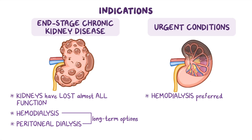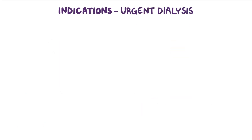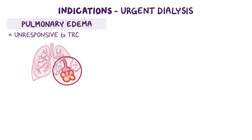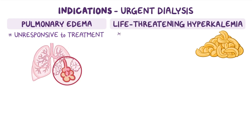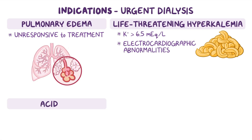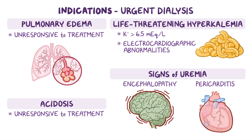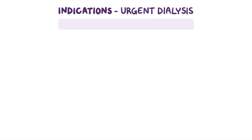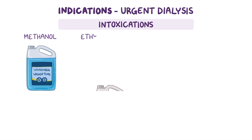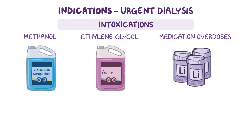These clients also usually have associated acute kidney injury. Indications for urgent dialysis include pulmonary edema unresponsive to conventional treatment, life-threatening hyperkalemia when potassium levels are over 6.5 mEq per liter with associated electrocardiographic abnormalities, acidosis unresponsive to conventional treatment, signs of uremia like encephalopathy or pericarditis, as well as intoxications — especially with methanol or ethylene glycol — and certain medication overdoses like lithium.